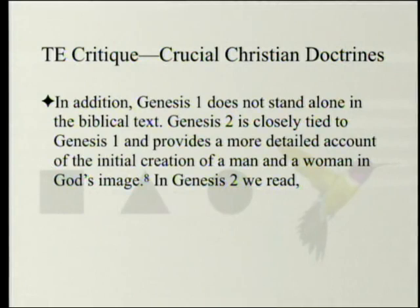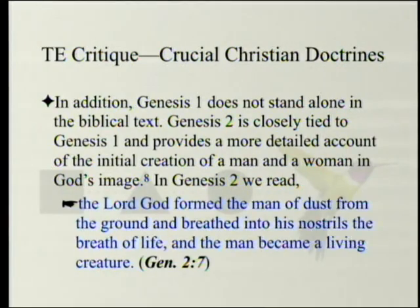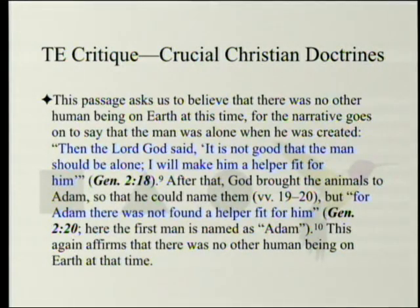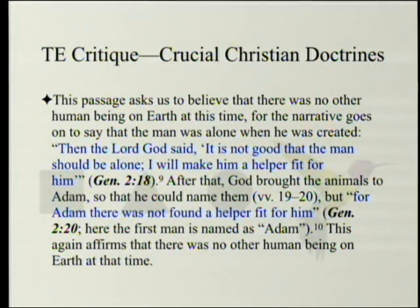Genesis 1 does not stand alone. Genesis 2 is closely tied to Genesis 1 and provides a more detailed account of the initial creation of a man and a woman in God's image. We read: 'The Lord God formed a man from the dust of the ground and breathed into his nostrils the breath of life, and man became a living creature.' This passage asks us to believe that there was no other human being on earth at this time, for the narrative goes on to say that the man was alone when he was created: 'It is not good that the man should be alone; I will make him a helper fit for him.' After that, God brought the animals to Adam so that he could name them, but for Adam there was not found a helper fit for him. This affirms that there was no other human being on earth at that time.